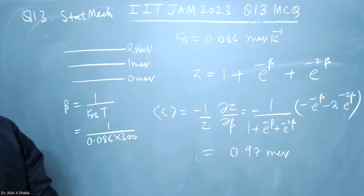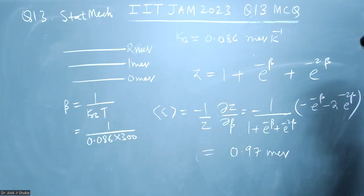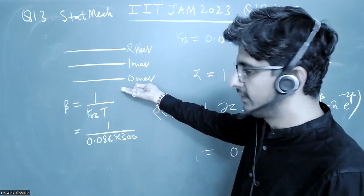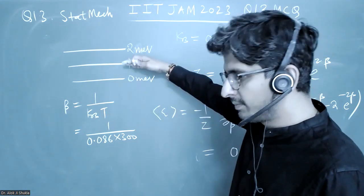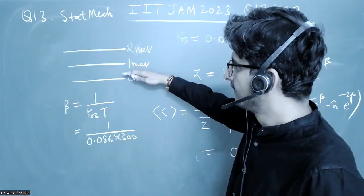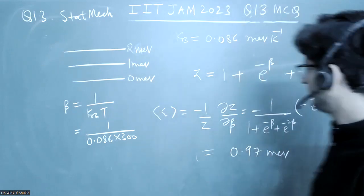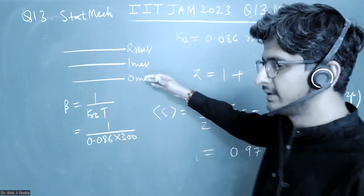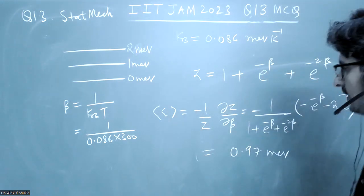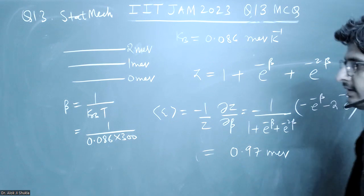And you can make a little guess also that because the ground level will be more probable, so energy will be towards this zero. And then there are 1 and 2. So you can see from the options that it can be between 0 and 2 because they are non-degenerate, so the weightage will go according to that. But it is better that you calculate it like this. Thank you.